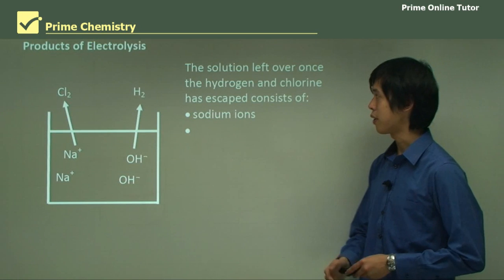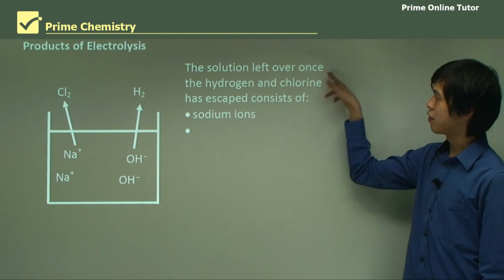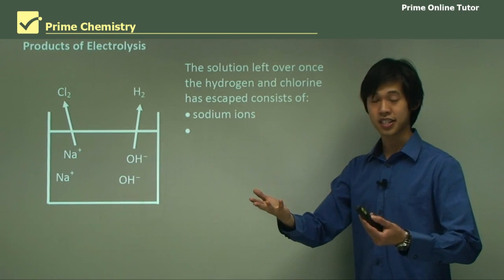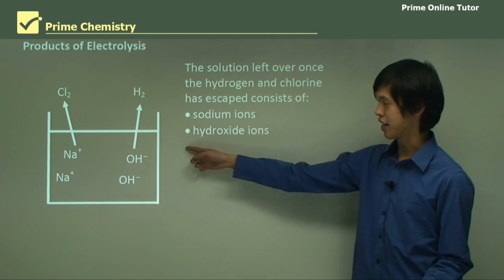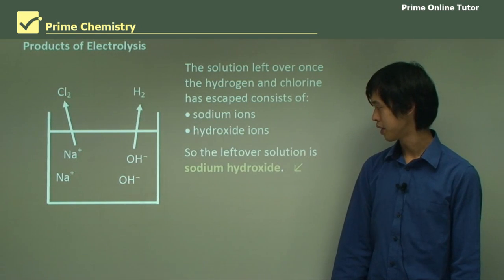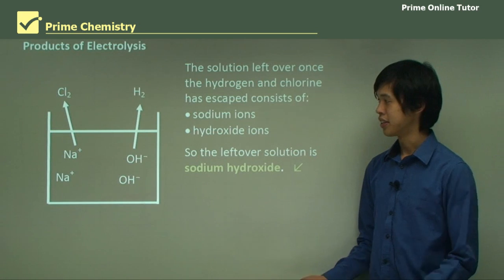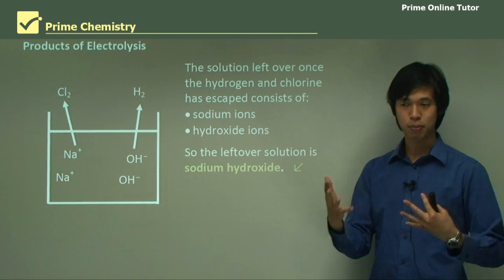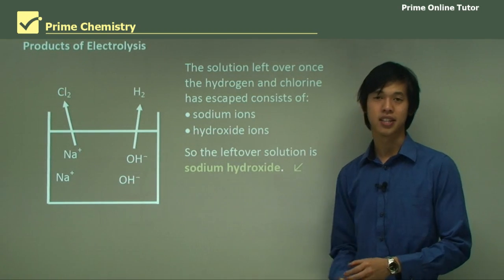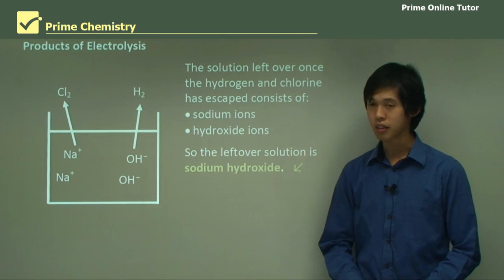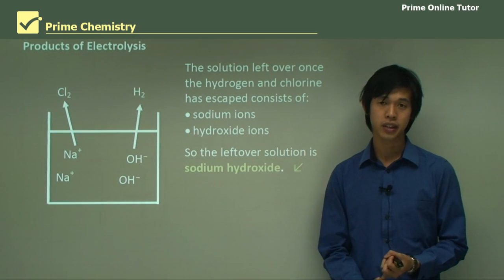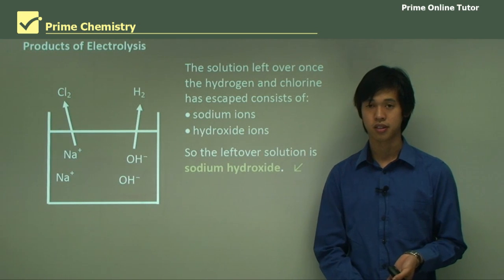So the products of electrolysis, how do we determine these? Well, the solution left over once the hydrogen and chlorine has escaped consists of sodium ions because the chlorine gas has escaped and hydroxide ions because the H2 has gone away as well. So that leaves you with essentially an NaOH solution. Whatever's left over is sodium hydroxide. So now that you know how this happens, in the next lesson we can look at what is the actual method to get this process to happen very favorably. That wraps up today's lesson on the electrolysis of sodium chloride: molten, dilute, and concentrated sodium chloride solution.